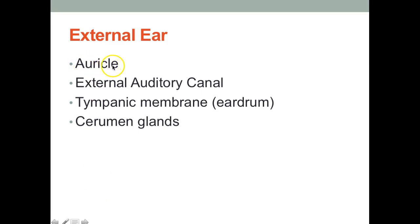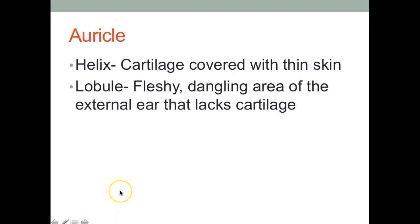Let's start with the external ear. Some of the structures of the external ear: we have the auricle — basically the ear, this is what we see on the outside. The external auditory canal, you could also call it the external acoustic meatus or external auditory meatus — all of those terms are correct. You also have the tympanic membrane, which is the eardrum, and the cerumen glands, which are the glands that produce that waxy substance in your ears.